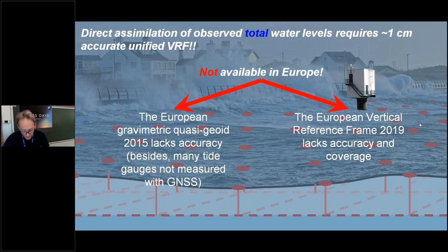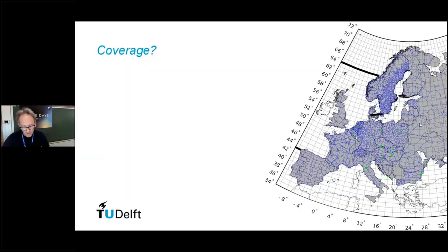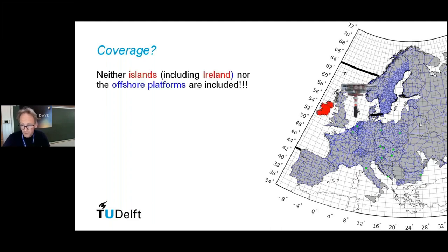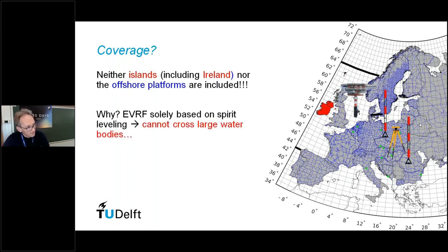The alternative way would be to exploit the European Vertical Reference Frame 2019. This model lacks the accuracy, but it also lacks the coverage. If you look at the data that underlies this network, it is the Unified European Leveling Network. It has coverage over a large part of the European mainland including the UK, but we lack, for example, Ireland and many of these offshore platforms in the North Sea.